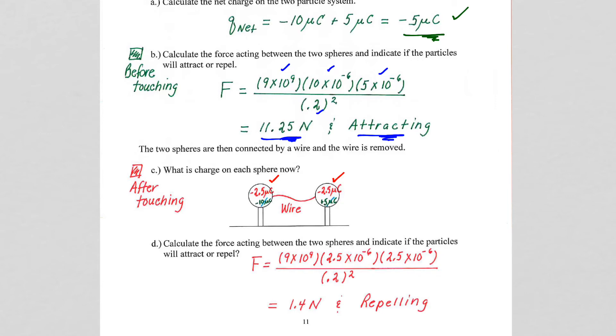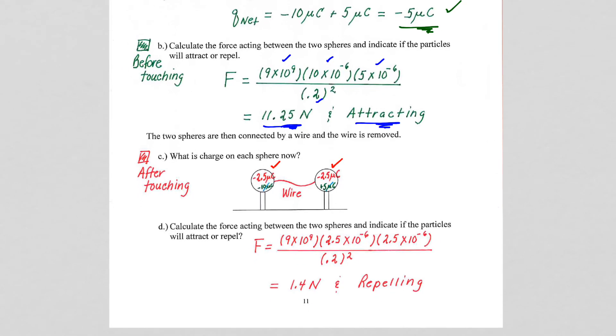We calculate just the magnitude of the charge, the K, Q1, Q2. The distance between them remain the same, R squared.